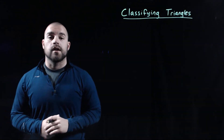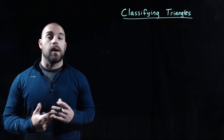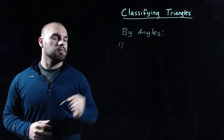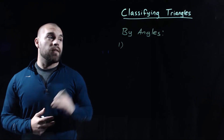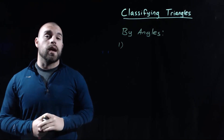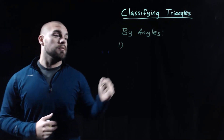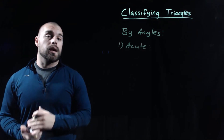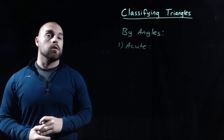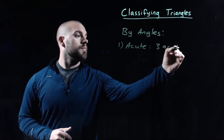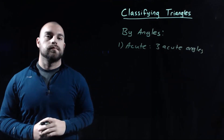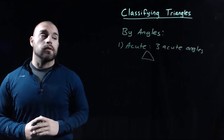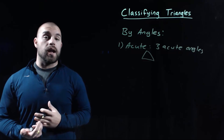The other way we can classify triangles is by their angles. One kind is an acute triangle. In an acute triangle, all three angles are acute angles, meaning all three angles have to be smaller than 90 degrees.